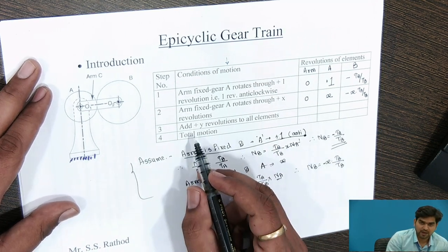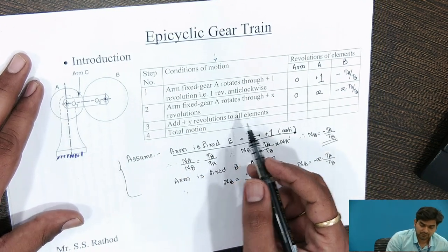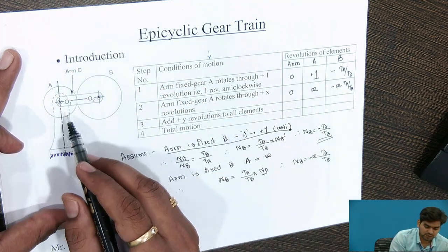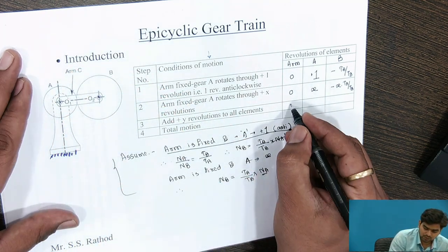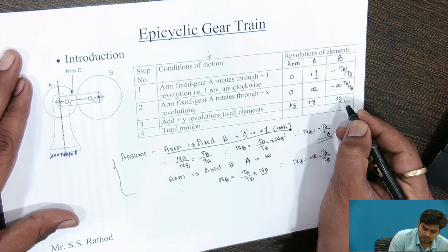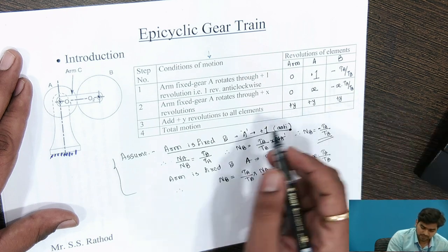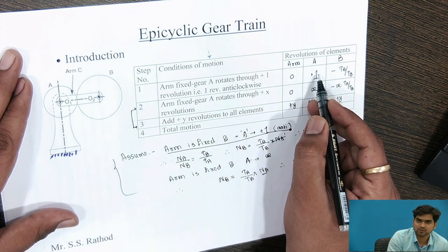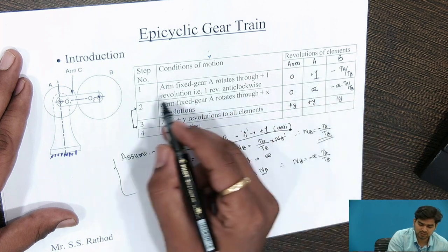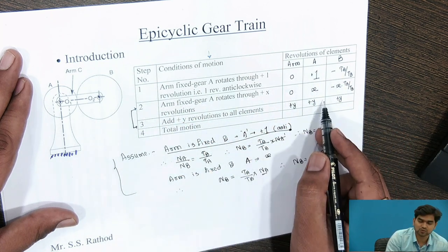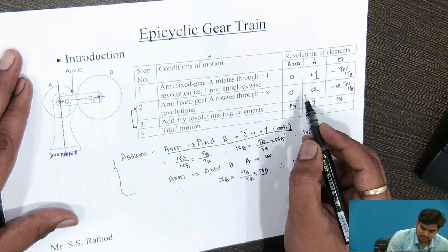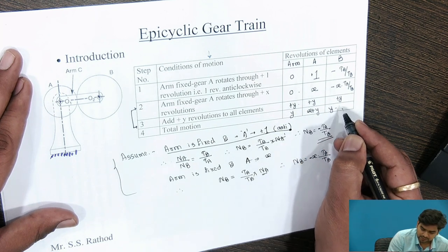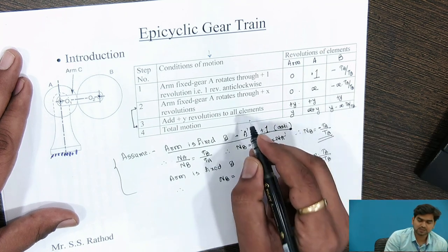We make the total revolution by adding conditions 2 and 3. We don't consider condition 1 because it is for one rotation only — we don't know the exact revolution of gear A. We are solving for X revolution and also considering the motion of the arm, so we add condition 2 and condition 3. The resulting total motion table gives: arm = Y, gear A = X plus Y, gear B = Y minus X into TA by TB. This is the table of motion — by knowing any one term, we can easily find the speed of the other elements.